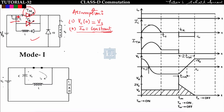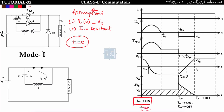Class D commutation is divided into three modes: Mode 1, Mode 2, and Mode 3. In Mode 1, at t=0, I trigger the main thyristor TM. The main thyristor turns on and behaves as a short circuit. The auxiliary thyristor is off. The capacitor discharges through TM, the diode (which is forward biased because the positive plate is connected to the anode), and the inductor — forming a discharging LC circuit.